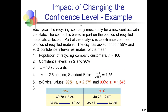To illustrate the impact of changing the confidence level, consider a recycling company applying for a contract based on pounds of recycled material collected. We need to estimate the mean pounds collected. After collecting and weighing recycling material from 100 customers, we found an average of 40.78 pounds of recyclable material per household. The population standard deviation is known to be 12.6 pounds.